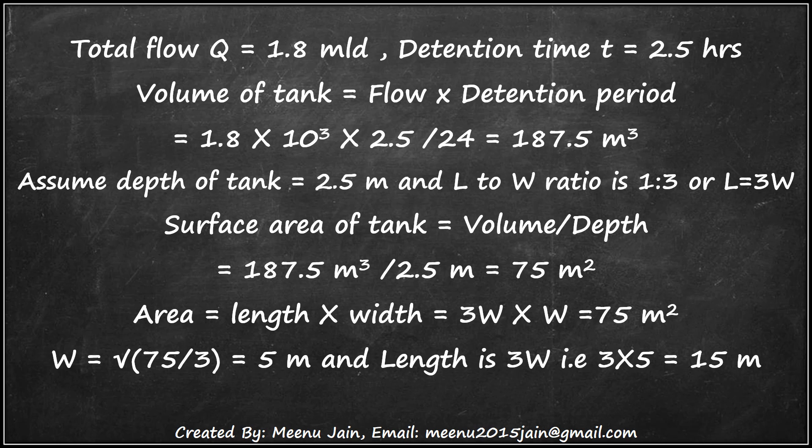Area equals length multiplied by width, that is 3W multiplied by W, which equals 75 square meters. So width equals the square root of 75 divided by 3, which gives 5 meters. And length is 3 multiplied by width, that is 3 multiplied by 5, giving 15 meters.